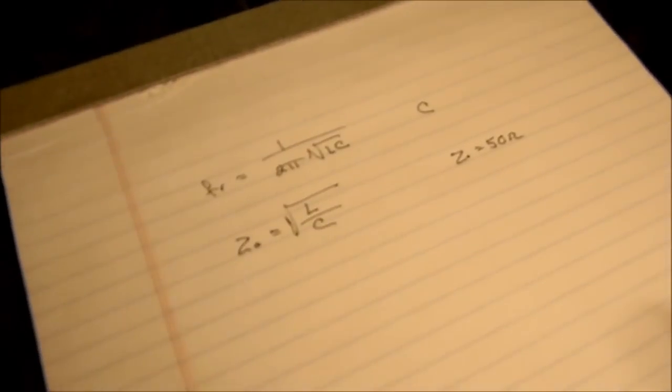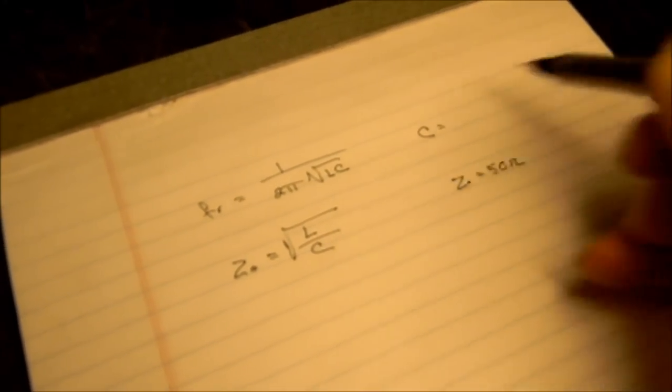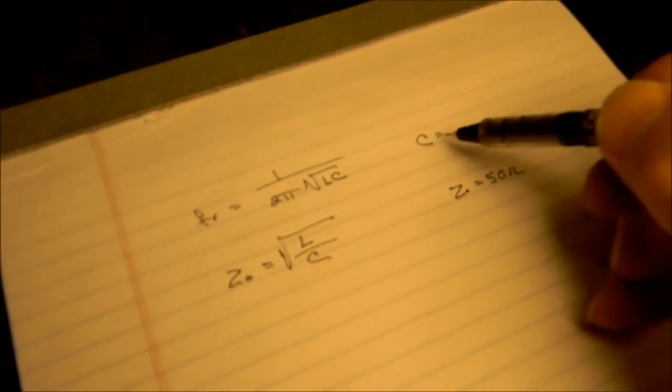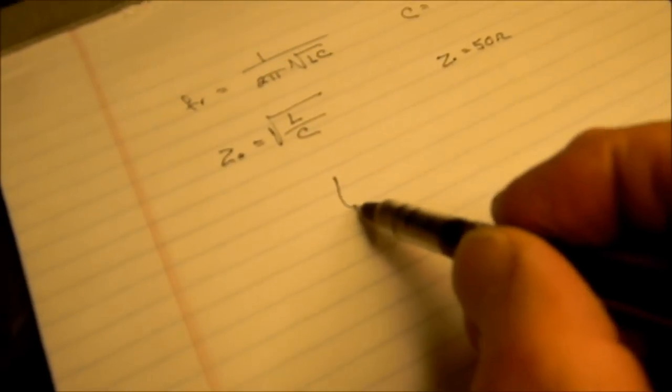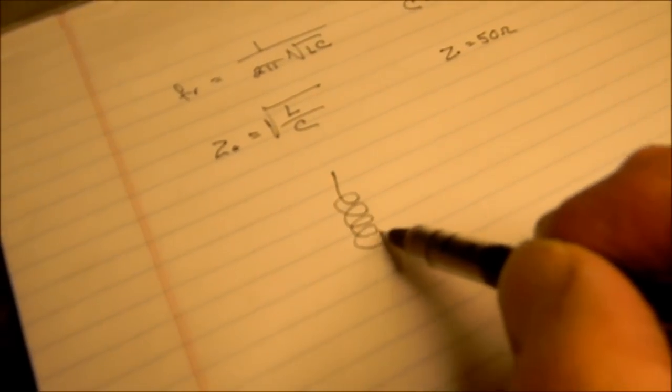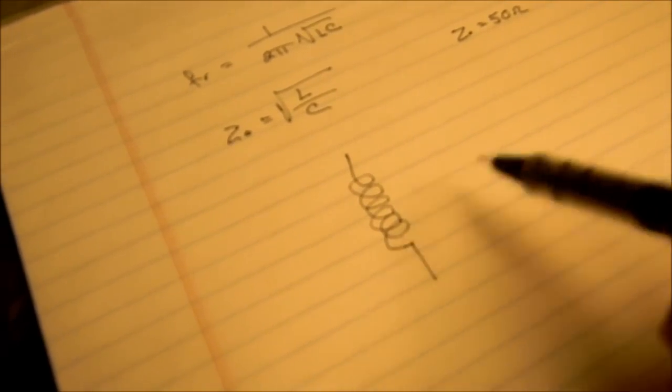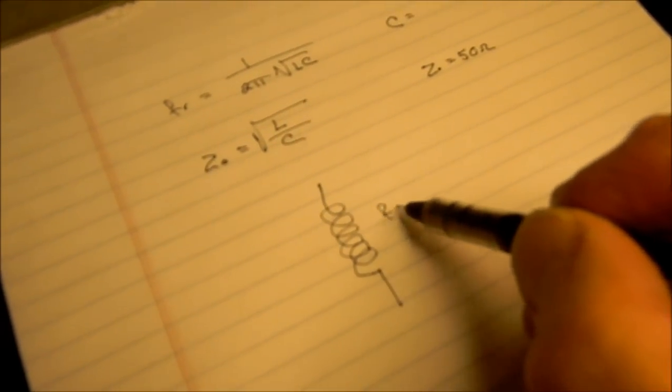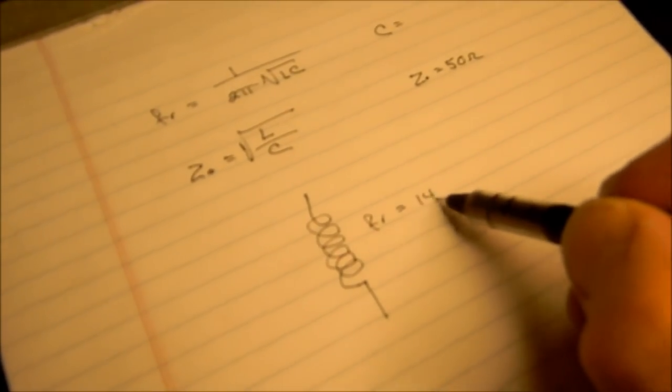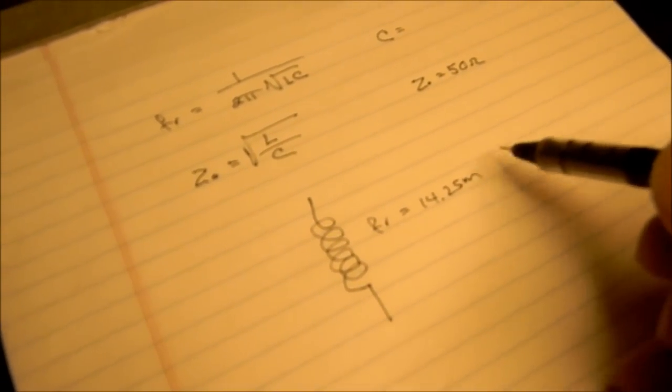Those are the two basic formulas. All we're really going to need, because we know what Z is, we're going to measure C, and we're going to calculate L. Then we're going to build a coaxial coil here, and we're going to see if we can get FR equal to 14.25 megahertz.